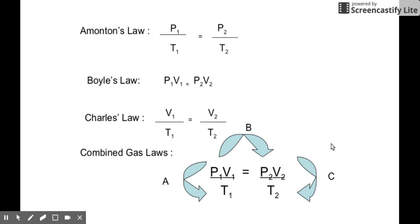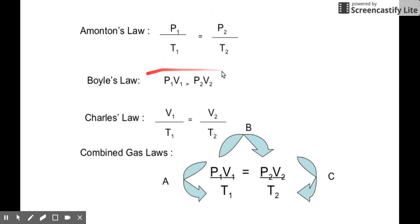We've learned about the three basic gas laws: Amonton's Law, Boyle's Law, and Charles' Law. These are the equations related to these three laws. Amonton's and Charles' Law have the same direct relationship, while Boyle's Law has an inverse relationship of pressure and volume.